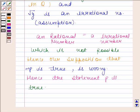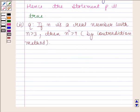Let's now move on to the second part. The second statement is if n is a real number with n greater than 3, then n squared is greater than 9 by contradiction method.